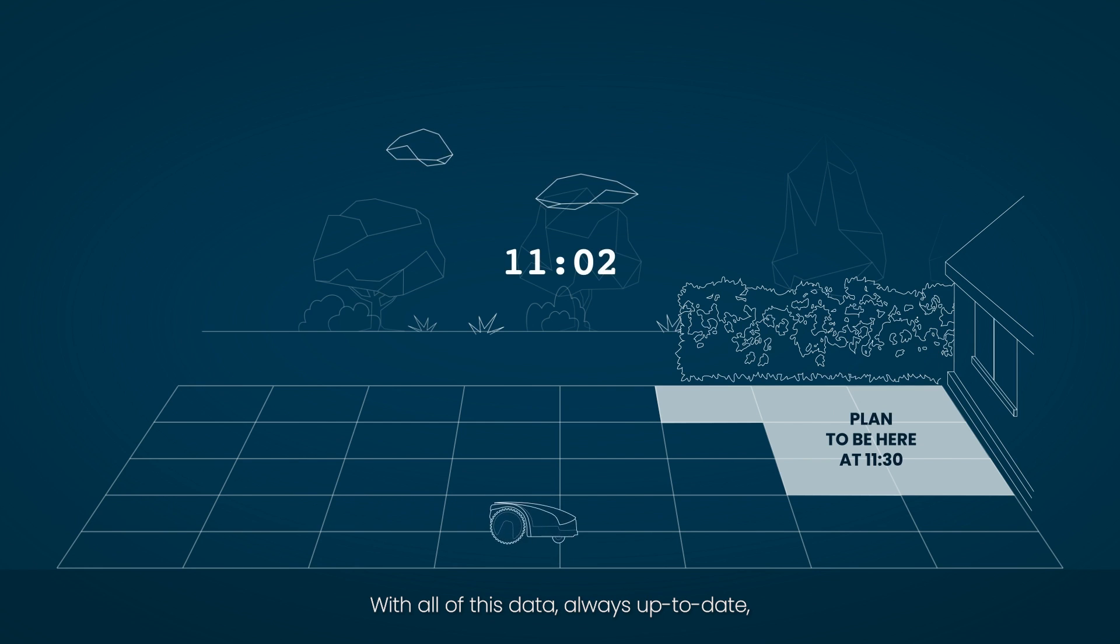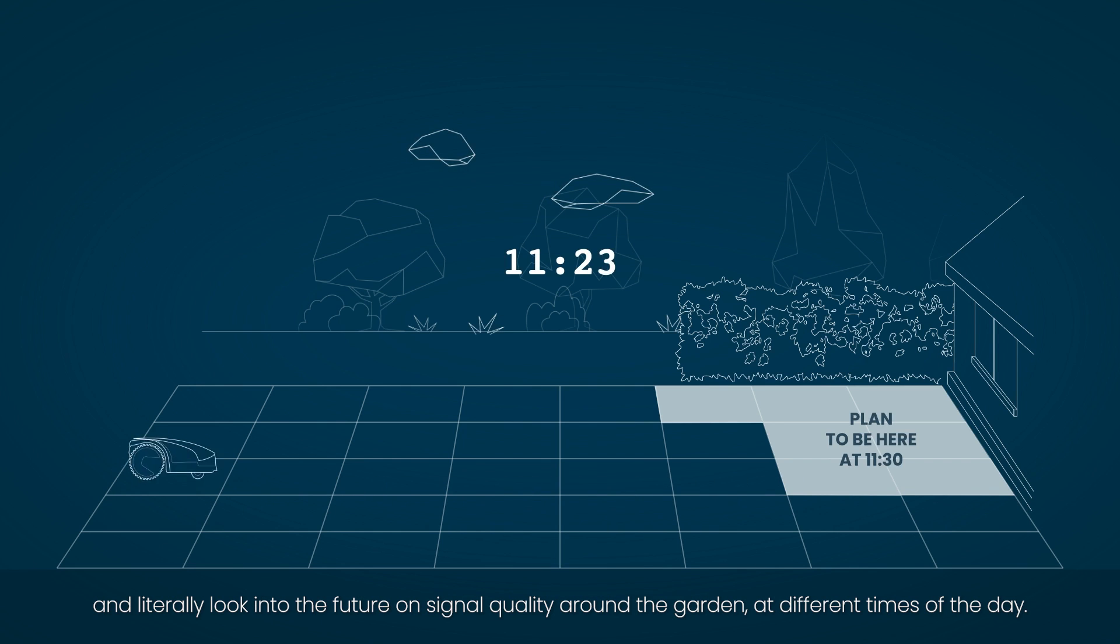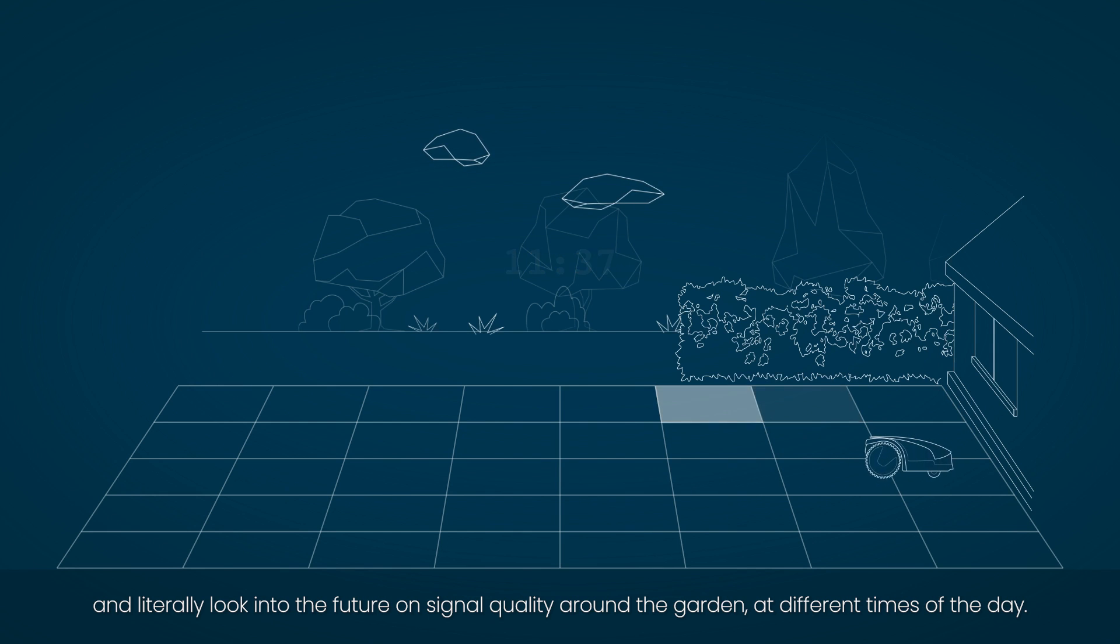With all of this data, always up to date, the Steger Autonomous Robot can map the whole garden in cells, and literally look into the future on signal quality around the garden, at different times of the day.